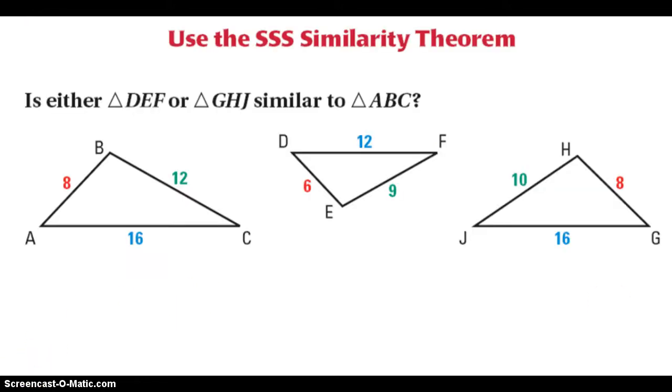So here's an application of the side-side-side similarity theorem. It says, is either triangle DEF or triangle GHJ similar to triangle ABC? So I'm going to look at triangle ABC first. Let's assume that they are similar. So ABC is similar to triangle DEF. And we're not sure yet exactly how that works, if they really are or not.